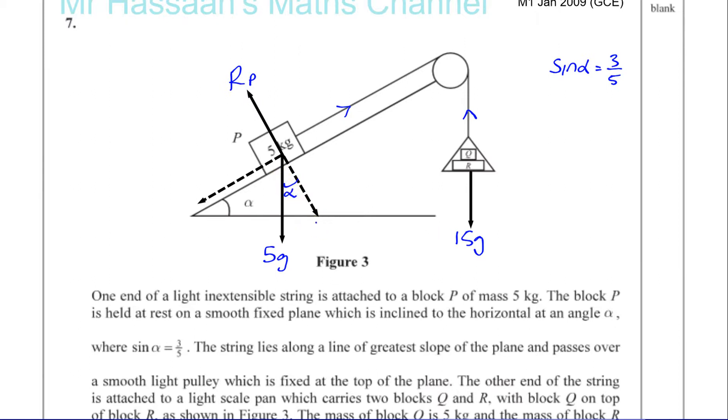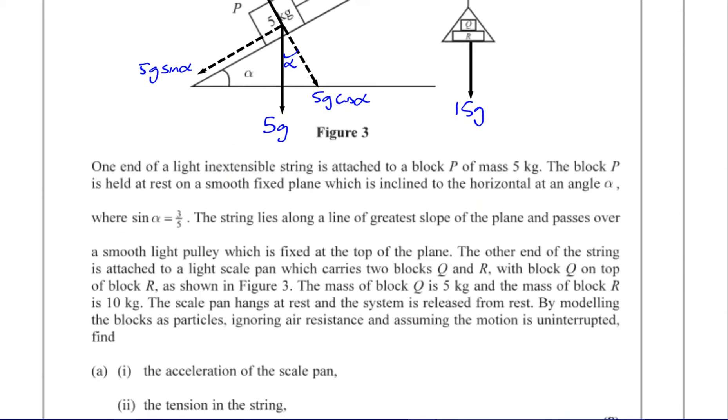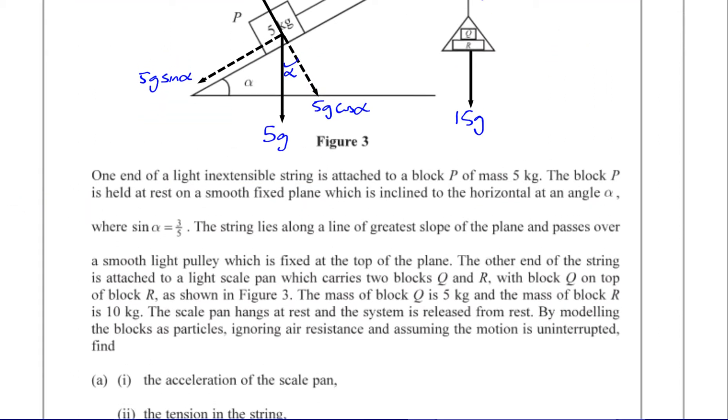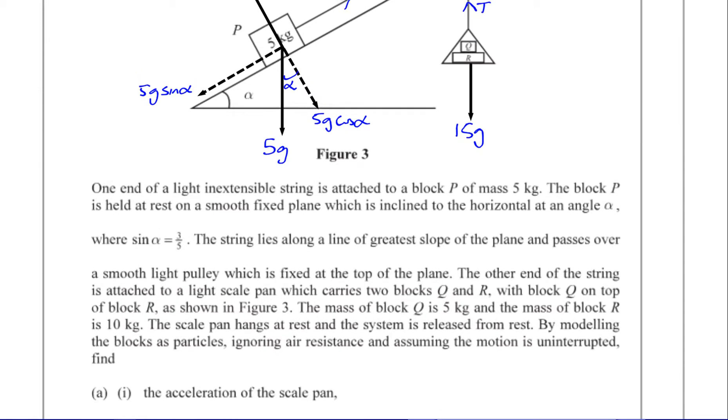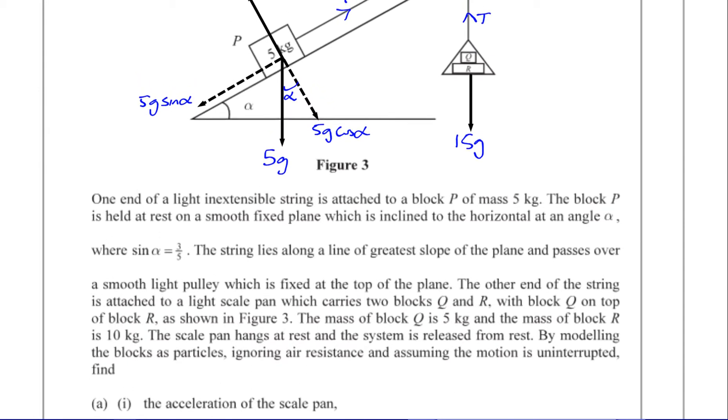Now I'm going to write down the components of this force parallel and perpendicular to the plane. This angle here is alpha, so this is 5g times cosine alpha going into the angle, and here we have 5g times sine alpha going away from the angle.